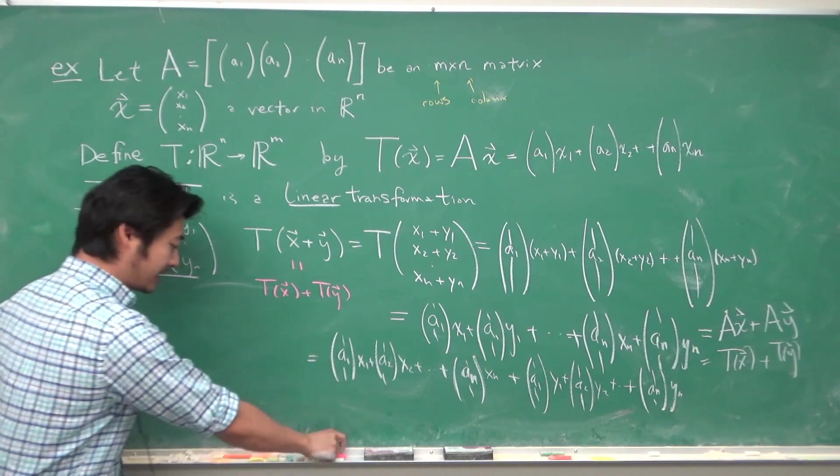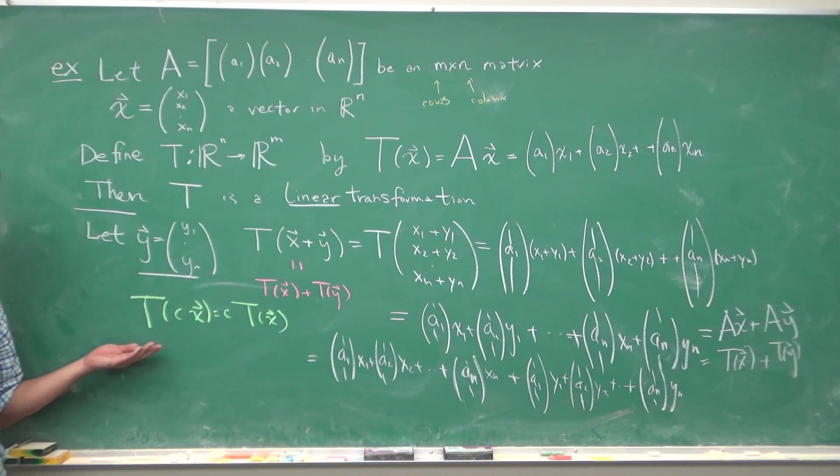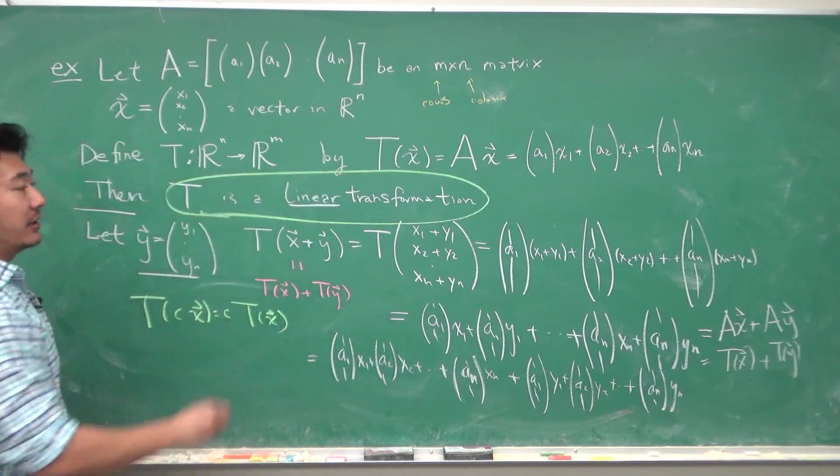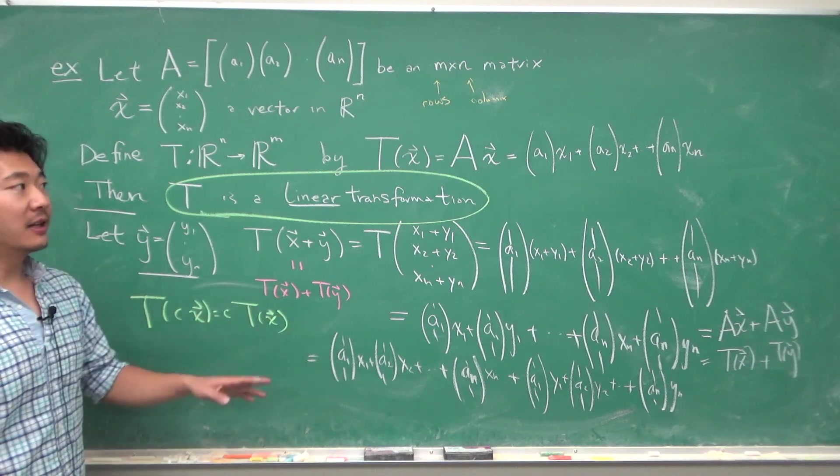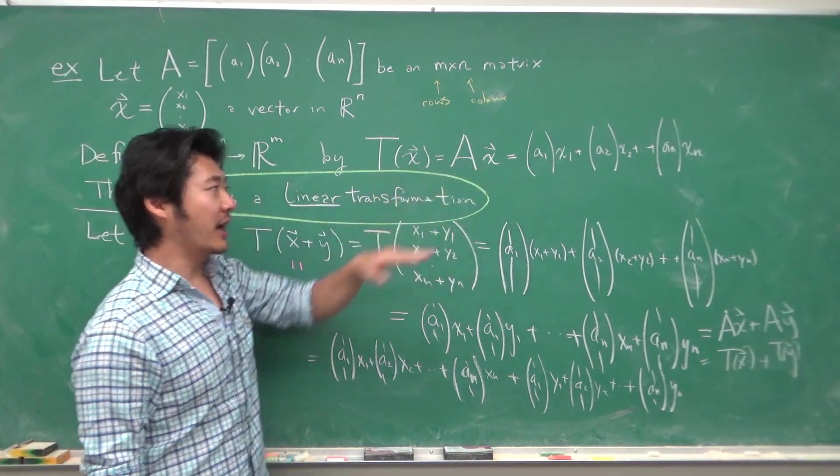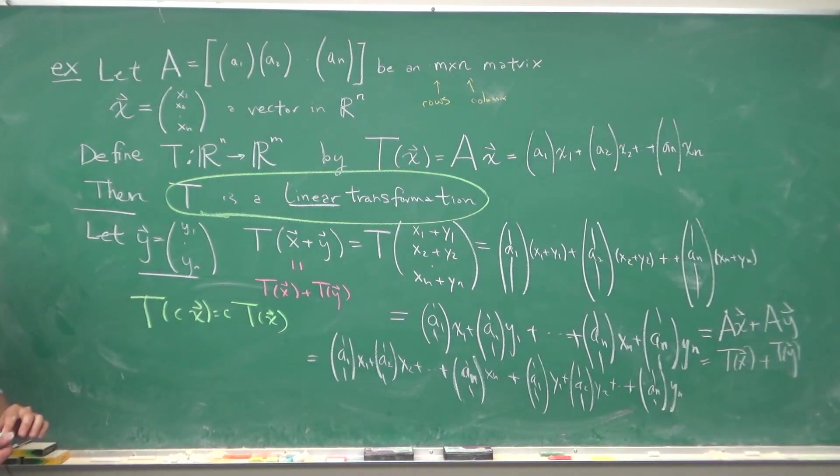And to show that scalars will also move outside the linear transformation is not too difficult. It's a very similar procedure, and so this will be left as a good exercise. And so having these properties verifies that T is a linear transformation, that defining a transformation as the matrix multiplication with x vector is a linear transformation.